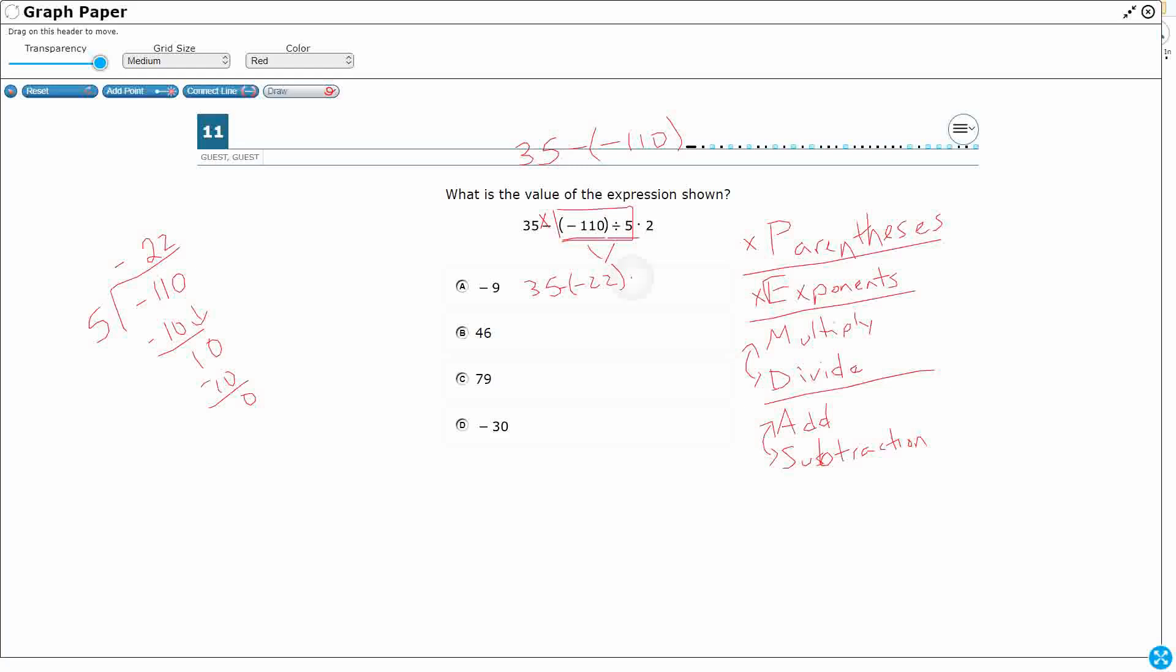And then still need to multiply by 2. So really I've just got two different operations. I've got the subtraction, 35 minus, and I've got to multiply by 2. So I need to do this back part first.